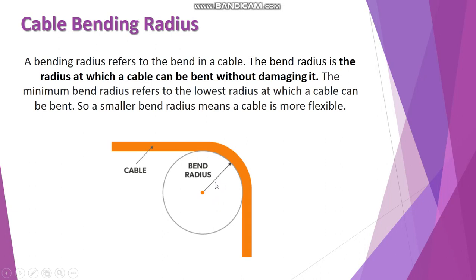The minimum bending radius refers to the lowest radius at which a cable can be bent. A smaller bending radius means a cable would be more flexible. You need to calculate this cable bending radius value before installing your cables on site, especially where you need some kind of bends due to the site conditions.